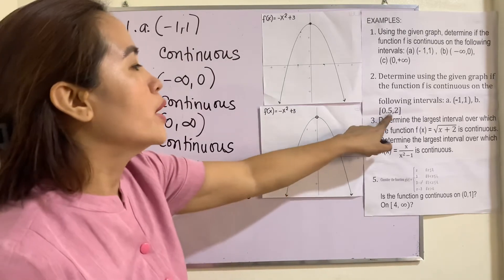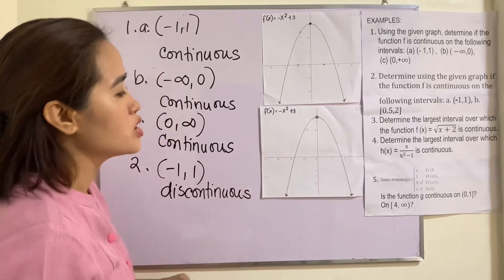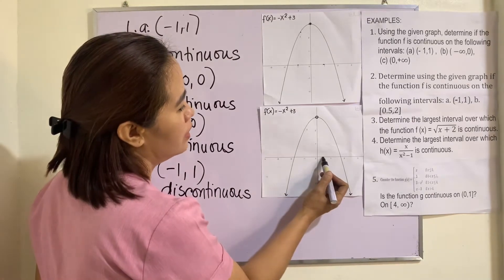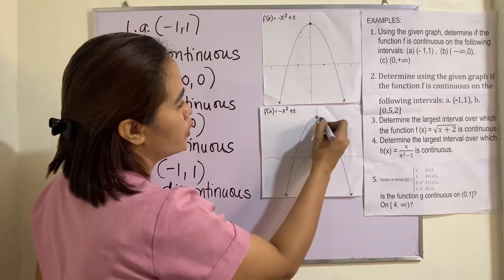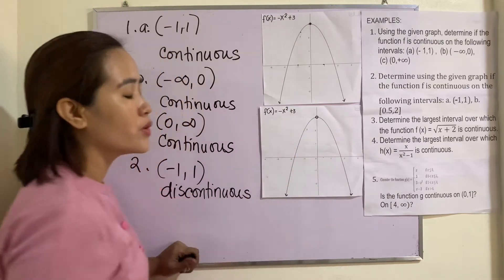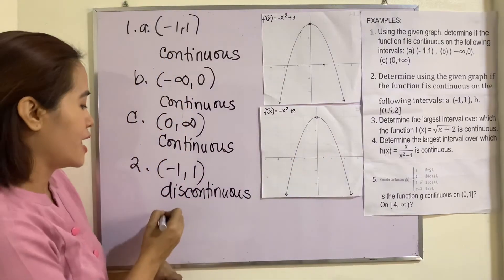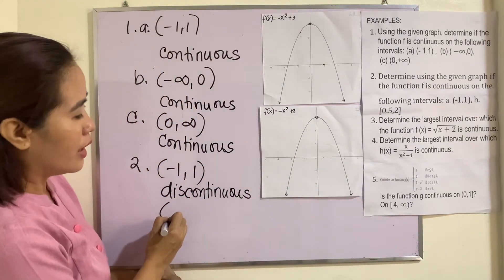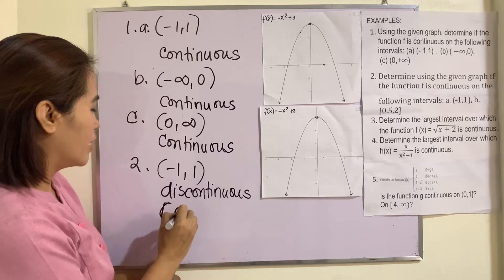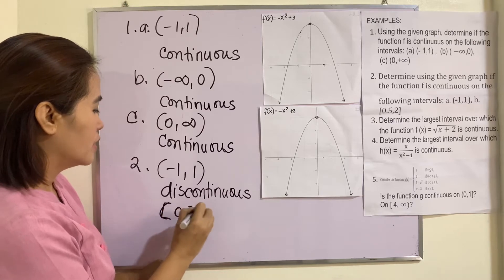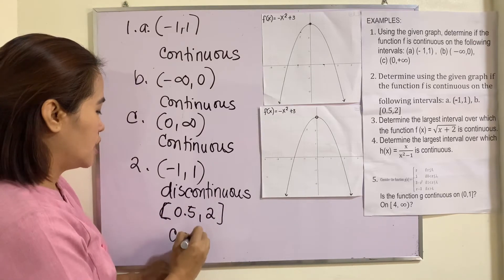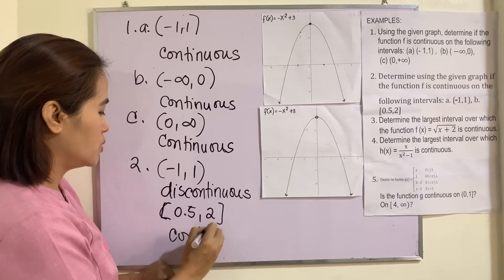What about 0.5 to positive 2? This one is 0.5 and this one is positive 2. In this interval, 0.5 to 2, the function is continuous.